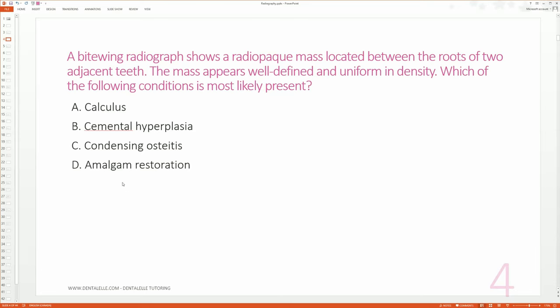Then let's just go down to the last one—amalgam. Would amalgam be seen in a bitewing? Of course. Is an amalgam dark or white? It's white. Would it be between two teeth? Well, it could be if it's interproximal. So you see how this is a tricky question.